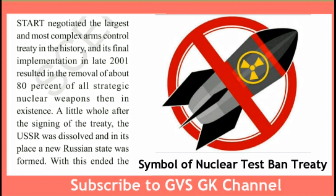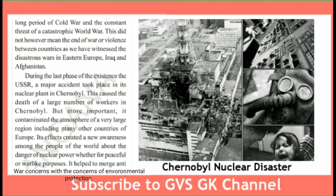A short while after the signing of the treaty, the USSR was dissolved and in its place a new Russian state was formed. The USSR was dismantled, and a new Russian state emerged — the demand of Eastern and Western USSR countries to dismantle the USSR finally became true. With this ended the long period of the Cold War and the constant threat of a catastrophic world war.